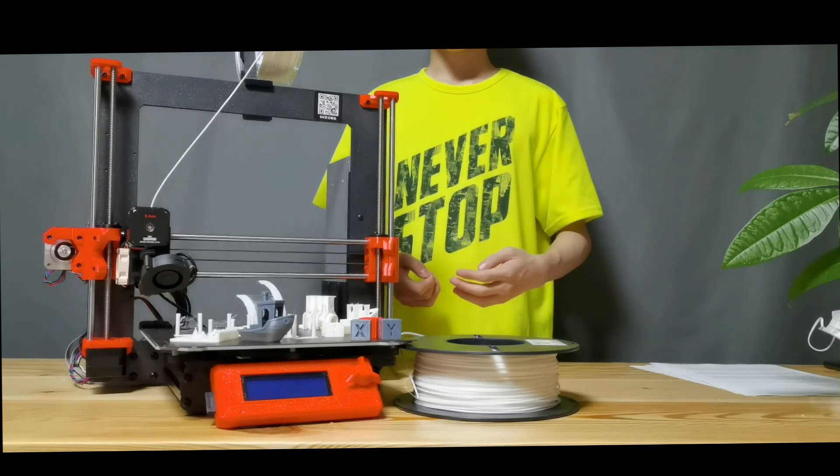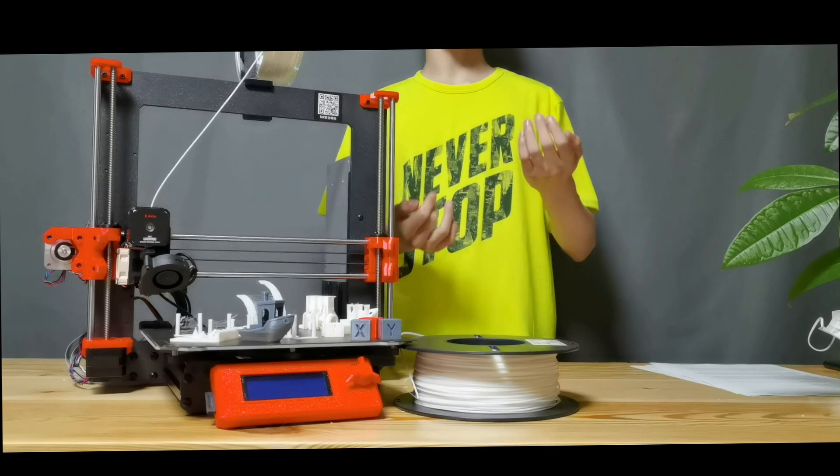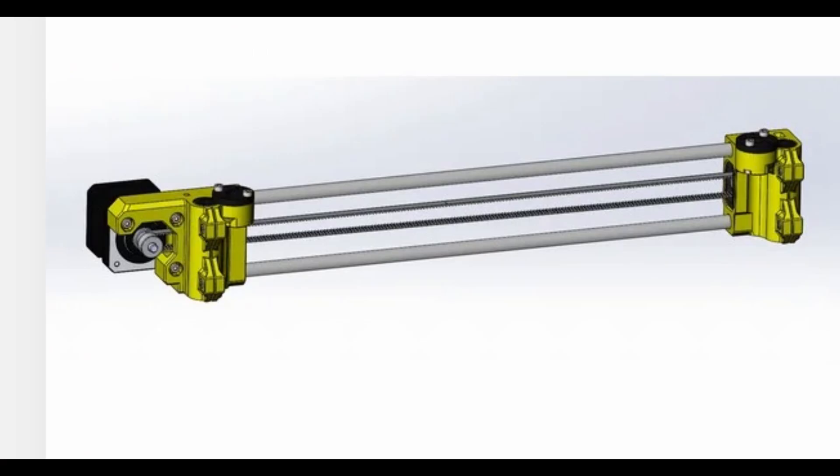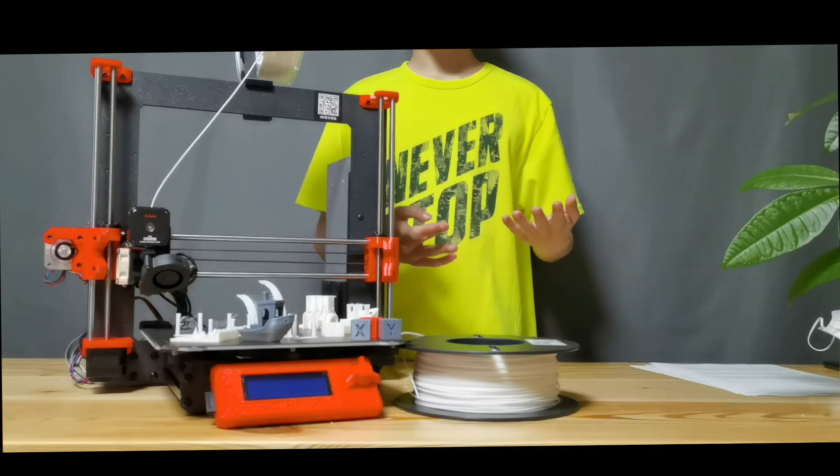Let's get started. This printer is essentially the same as a normal Prusa i3 Mark III S. Sure, the X carriage is different and there's no Prusa logo, but that's about it.